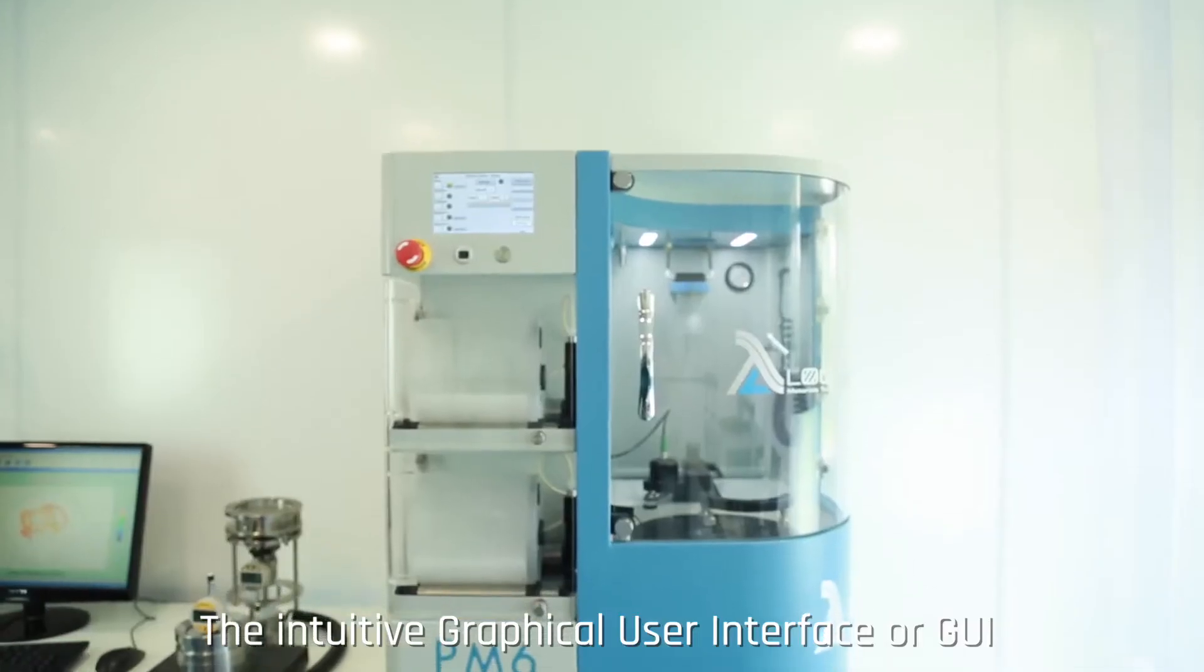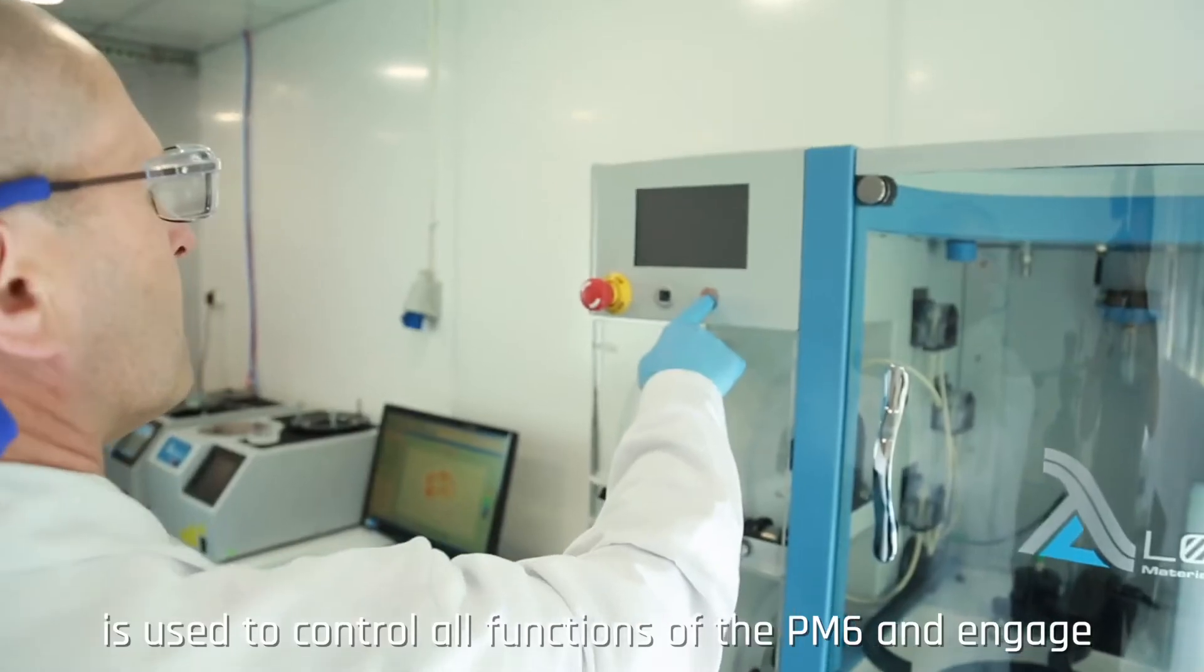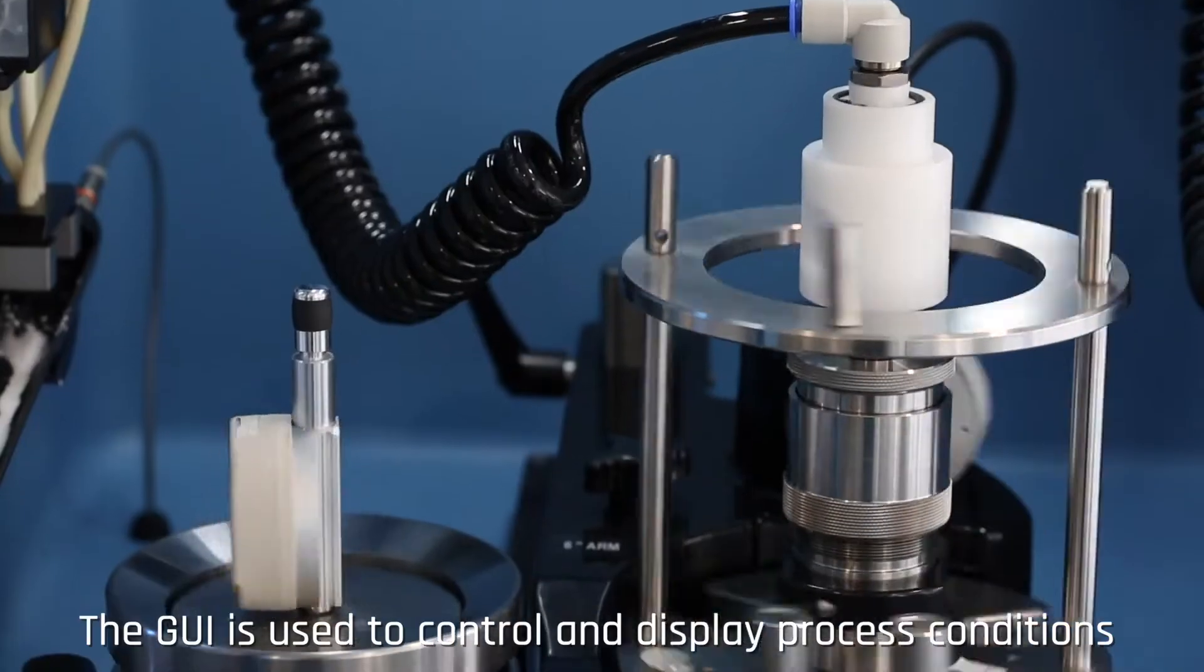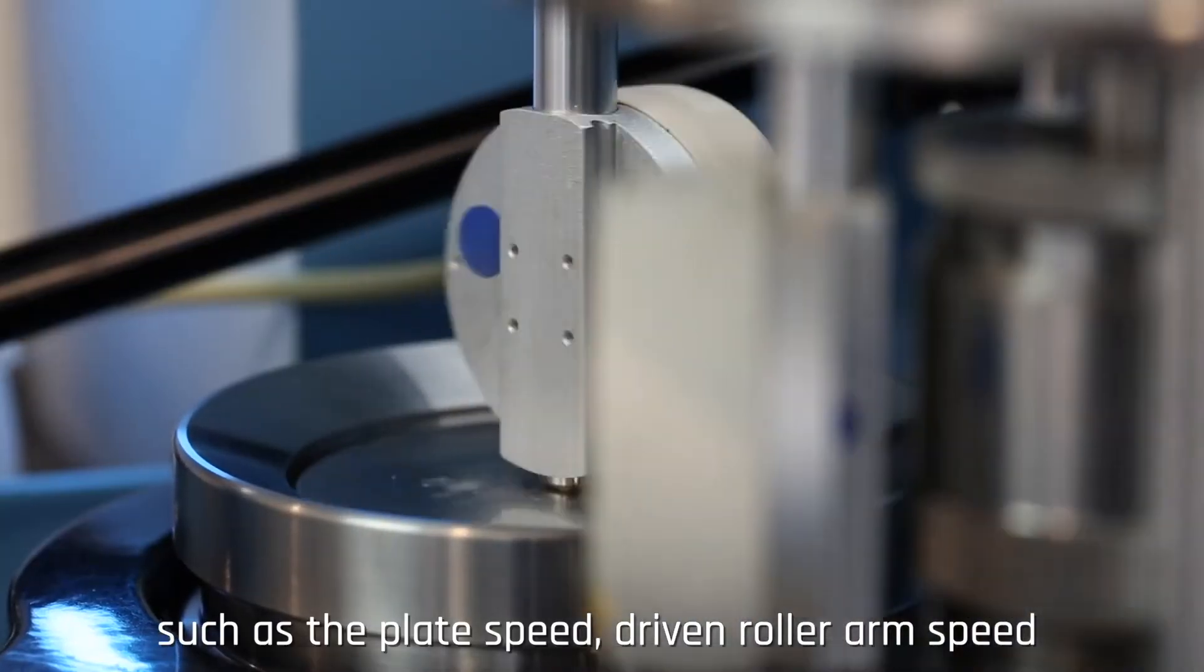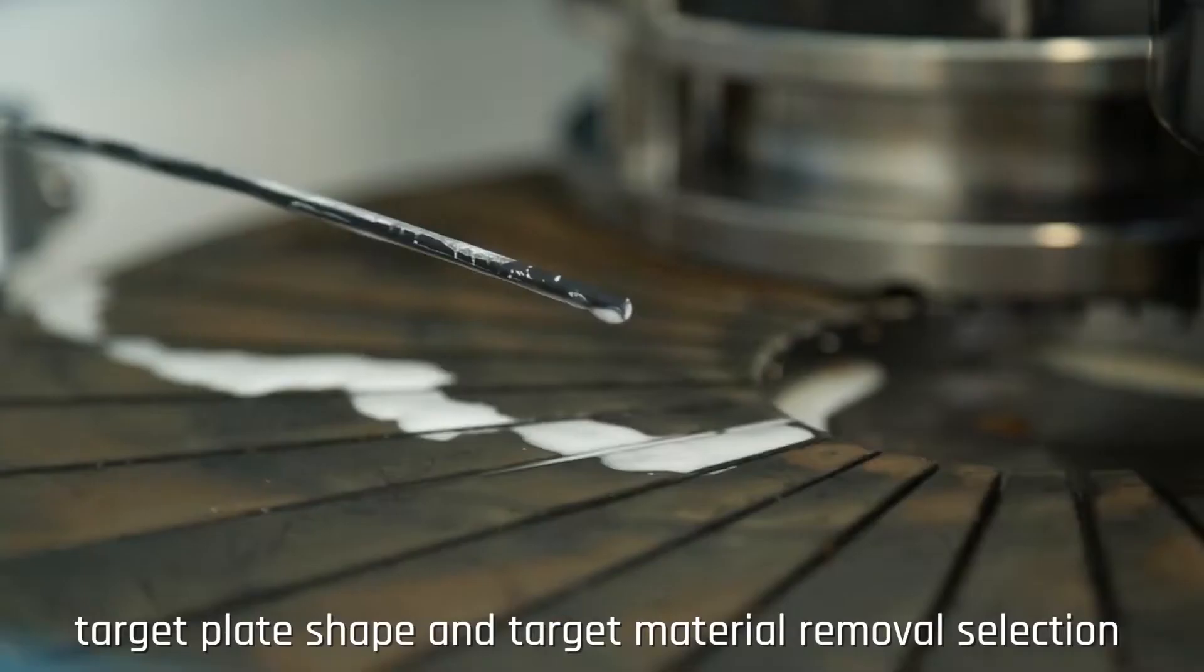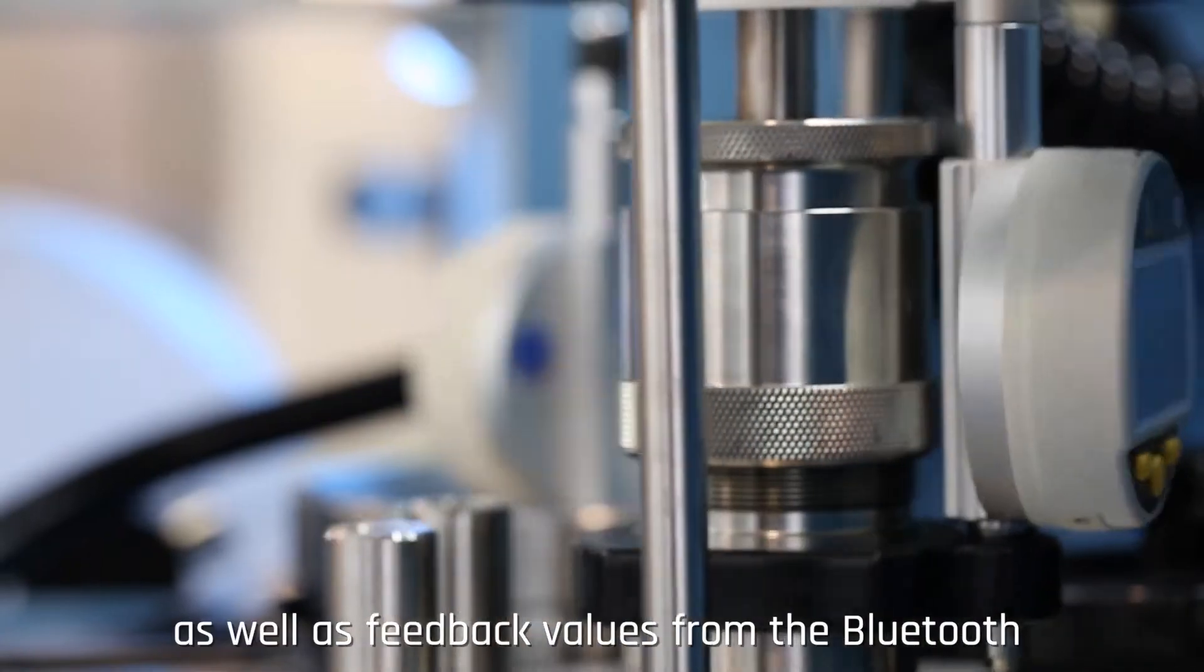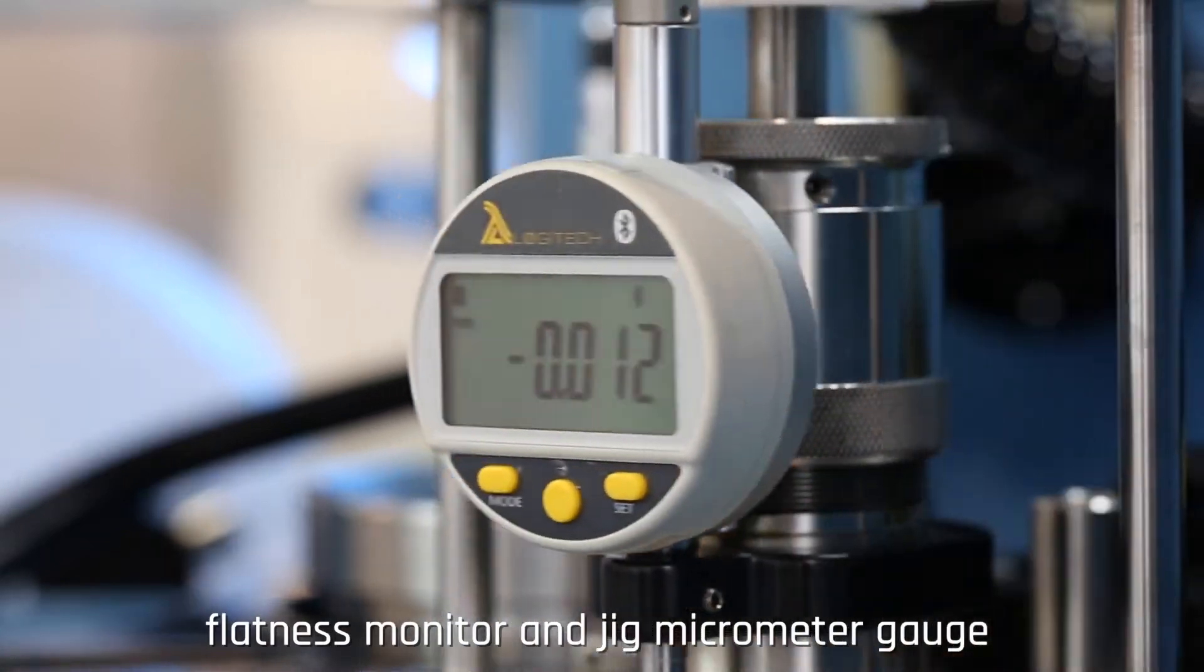The intuitive graphical user interface or GUI is used to control all functions of the PM6 and engage fully with the process. The GUI is used to control and display process conditions such as the plate speed, driven roller arm speed, target plate shape and target material removal selection, as well as feedback values from the Bluetooth flatness monitor and jig micrometer gauge.